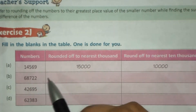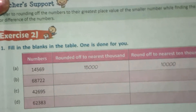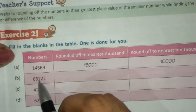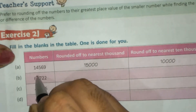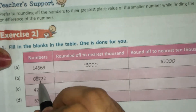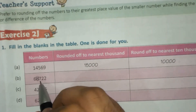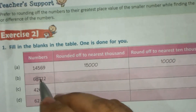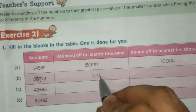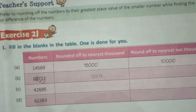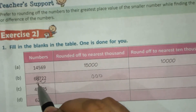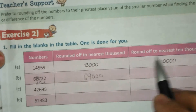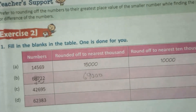Nearest thousand — the first example is already done for you, so we take the second example. Thousand place: ones, tens, hundreds, thousands — we will round at the thousand place. We look at the digit just before the thousand place, which is 7. Since 7 is greater than 5, the digits after it become 0 and 1 is added to 8, making 9.